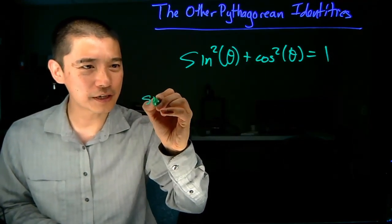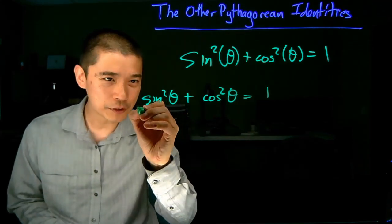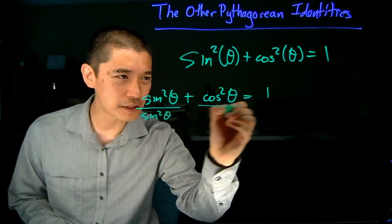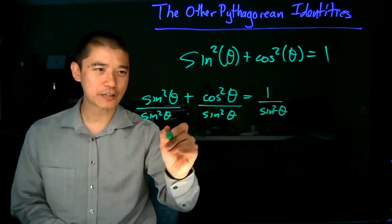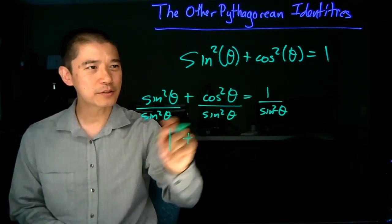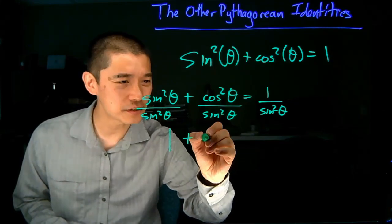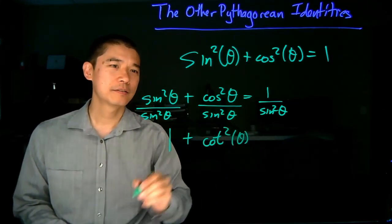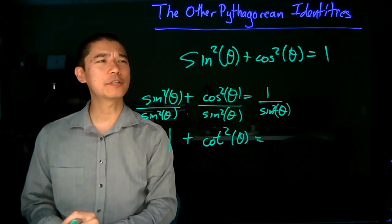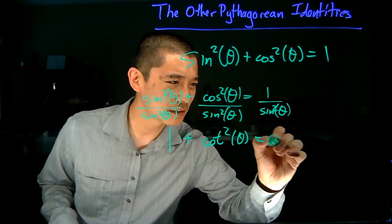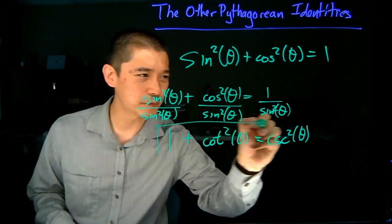So sine squared theta plus cosine squared theta equals 1. We're going to divide each term by sine squared theta. Sine squared over sine squared is 1, plus cosine squared theta over sine squared theta. Cosine over sine is cotangent, so this is cotangent squared theta. And 1 over sine theta is cosecant theta, so it's cosecant squared theta. This is another version of the Pythagorean identity.